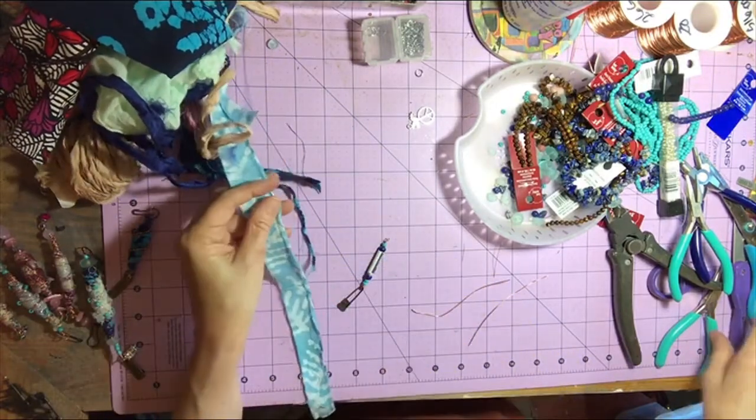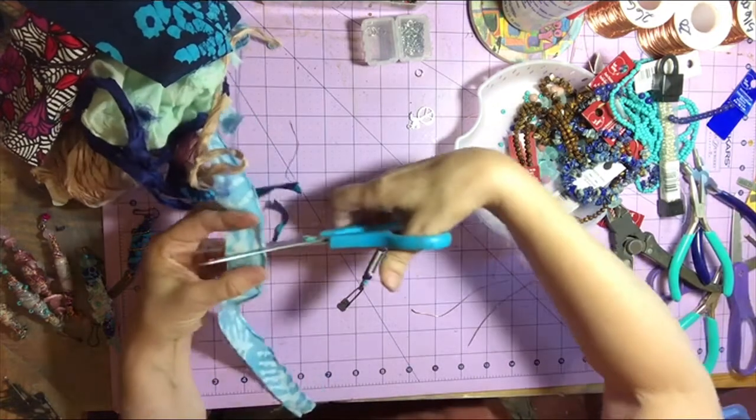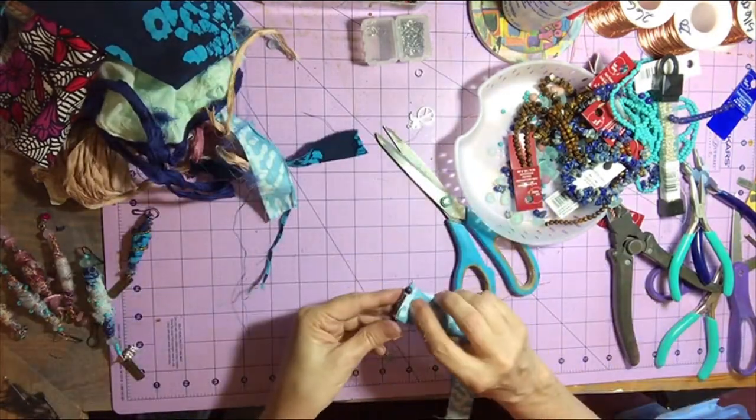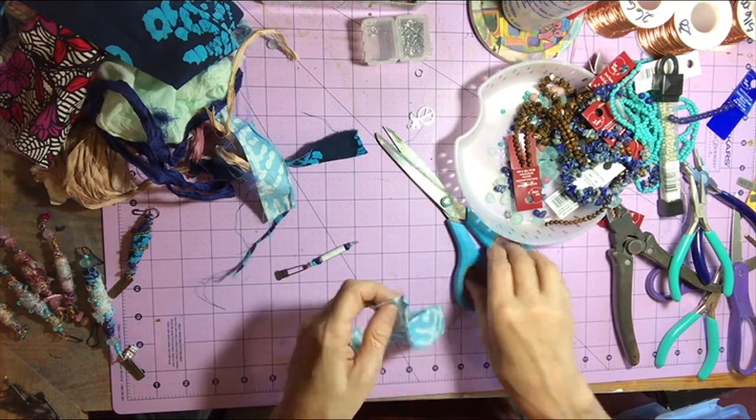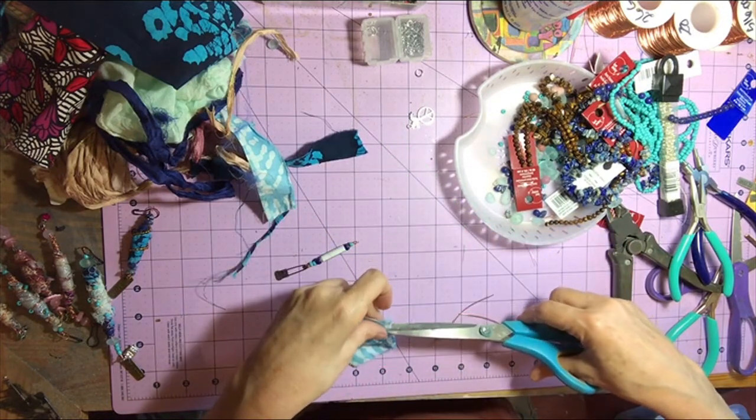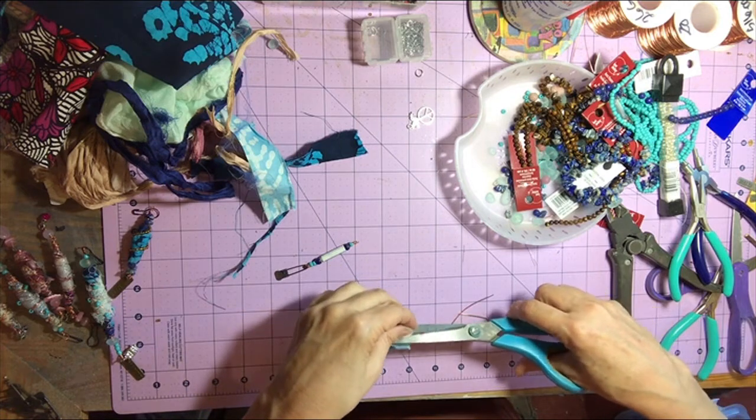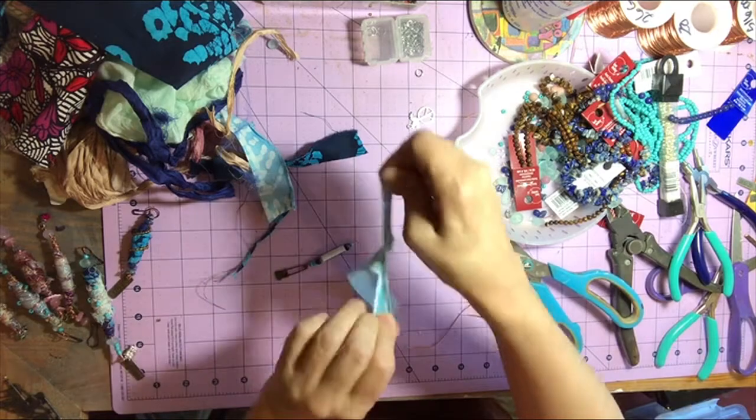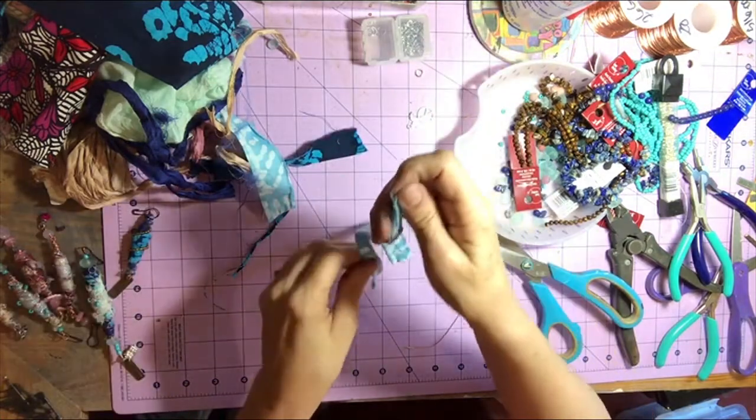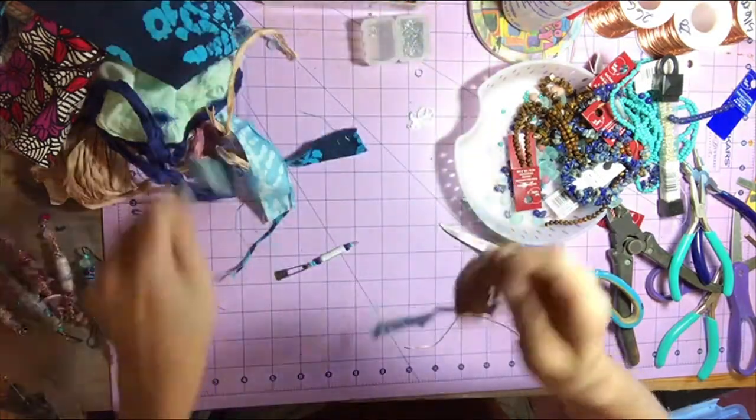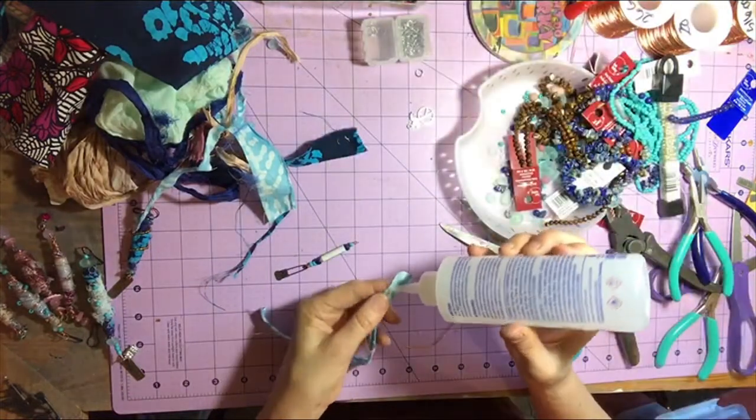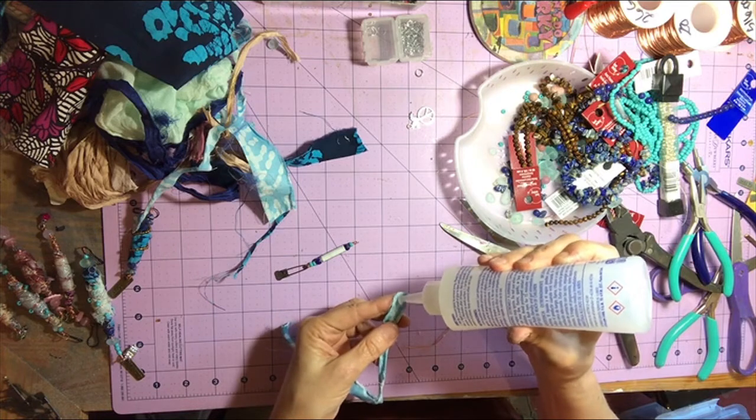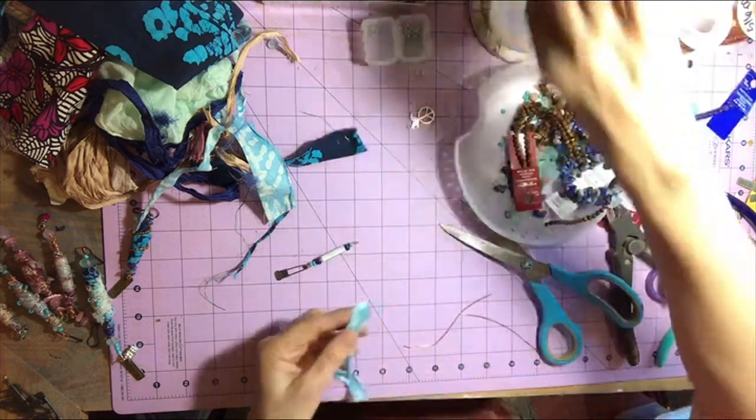So now I'm going to pull out some batik fabric that is already torn into strips and we're going to use this to wrap around the paper tube. I would like for it to be a little thinner, so I'm going to tear it in half. I'm not going to cut it in half. I'm going to cut it slightly to get the fabric started and then just rip it. That ripping gives a nice jagged edge on the side of the fabric, which I like for the boho beads.